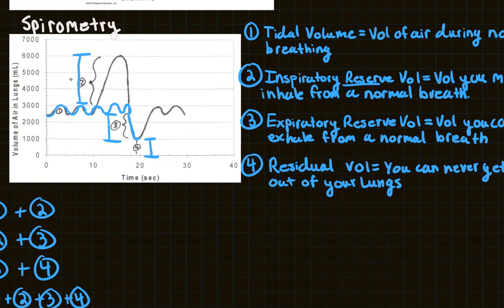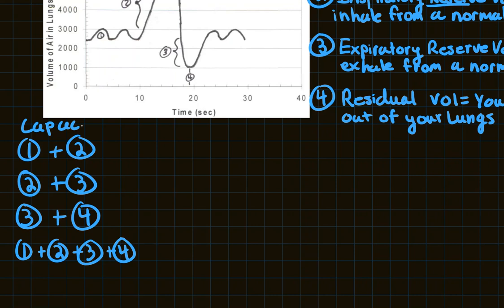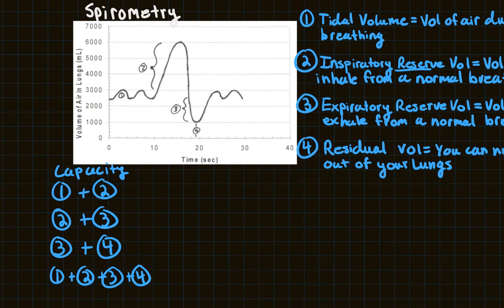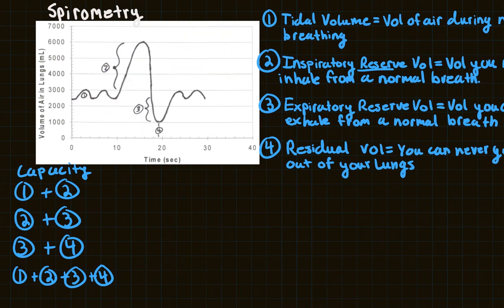All of those individual numbers are your volumes. When you start to add them together, you get a capacity. Tidal volume plus inspiratory reserve volume gives you your inspiratory capacity — the total amount of air you can inhale starting from a normal breath. The difference from inspiratory reserve volume alone is that it also accounts for your tidal volume.